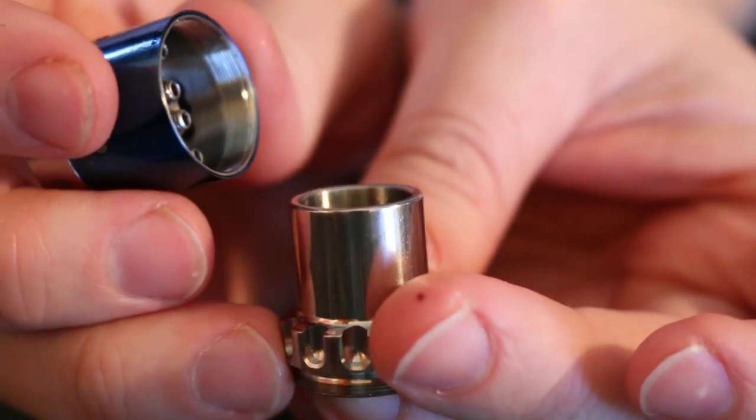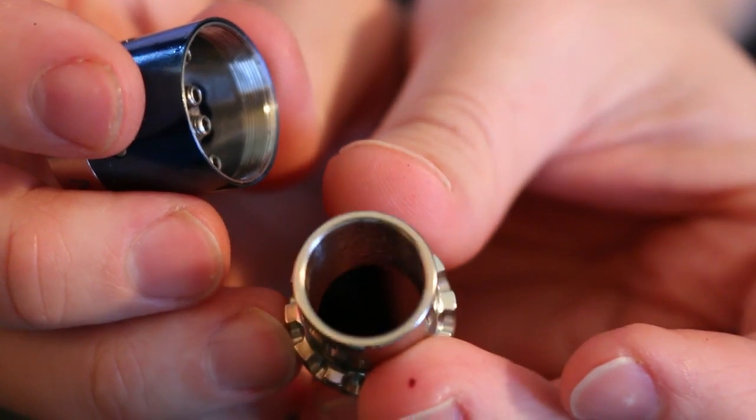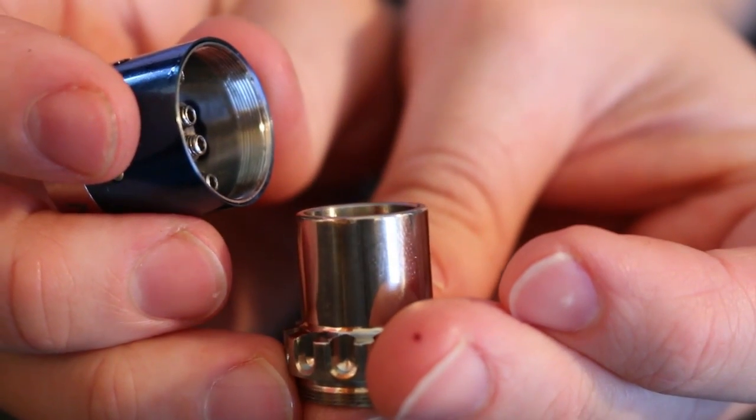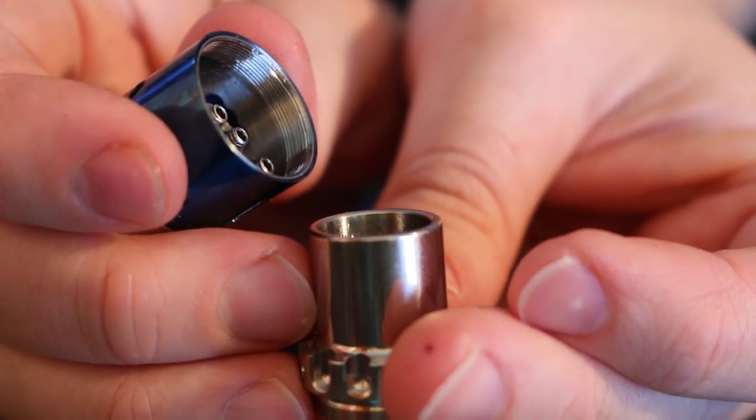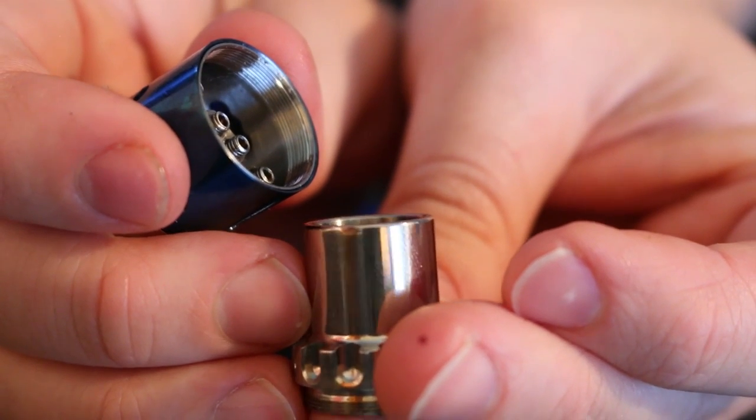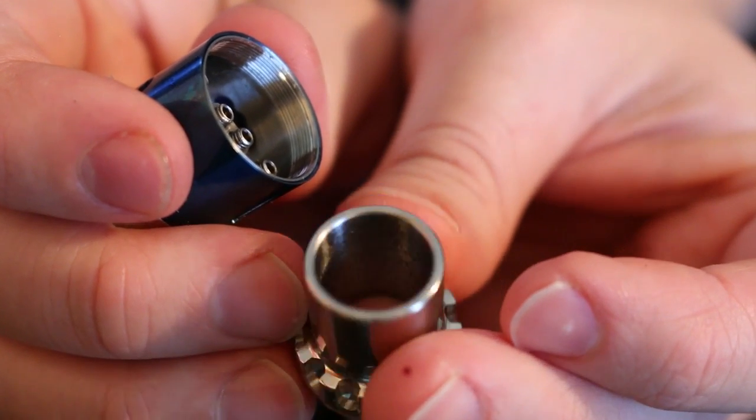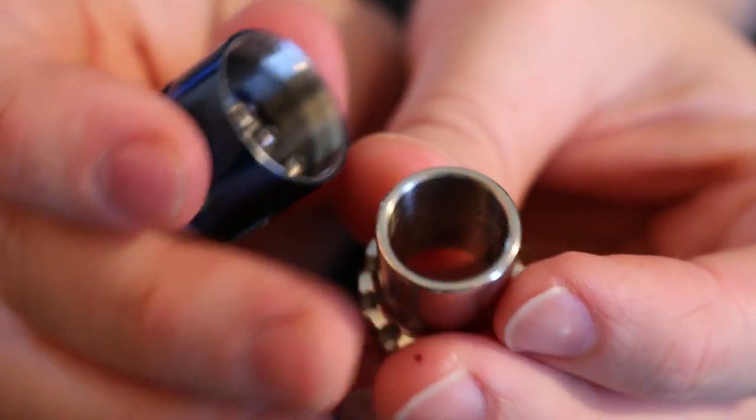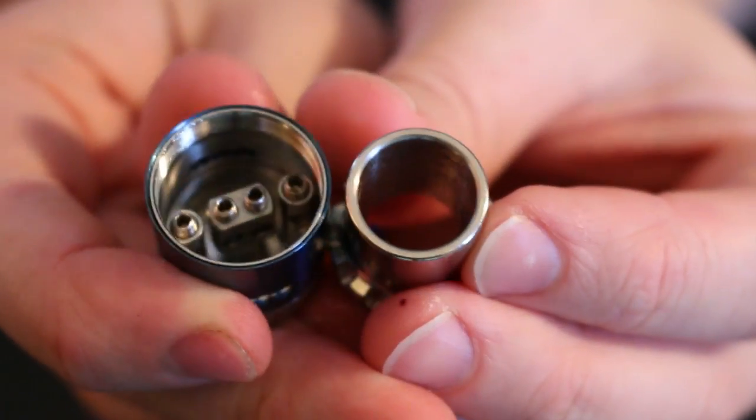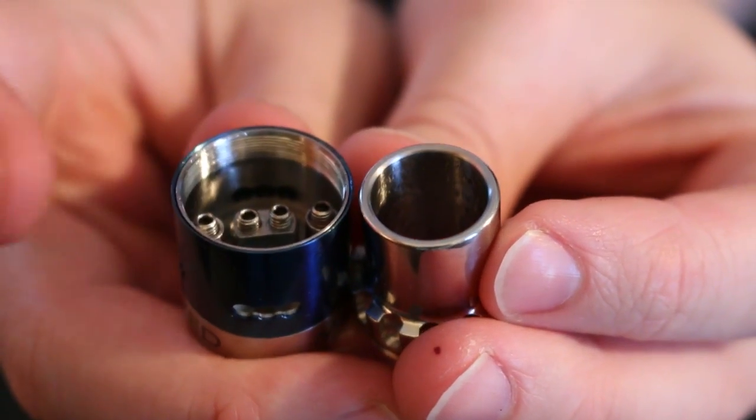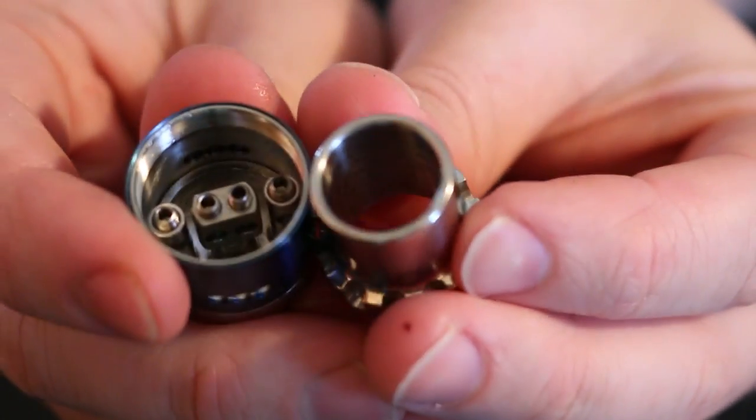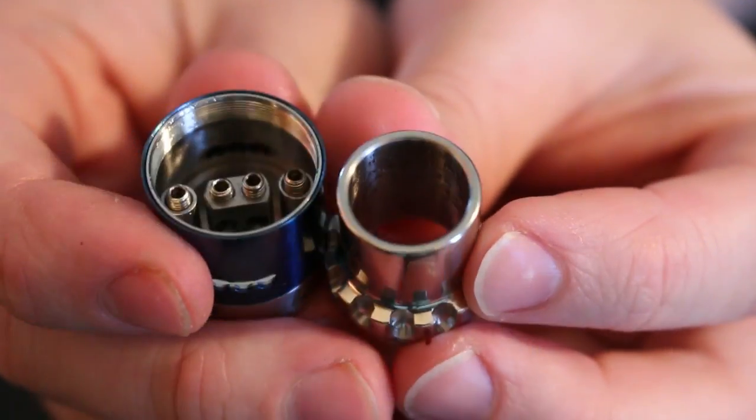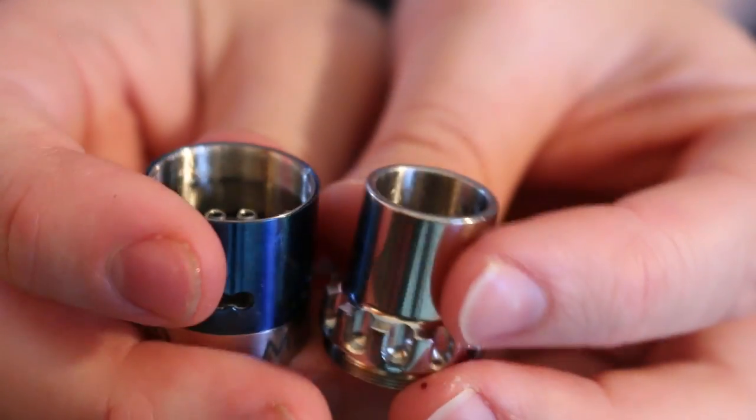So it is very large. I would say the innards, the inner bore of this is probably about 10 millimeters, 12 millimeters? I'm just guessing. Anyway it is really large. I mean there is your 22 millimeter size and this is the actual tip for the larger chuff style tip. So that is that.